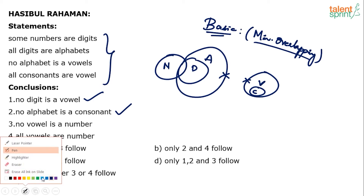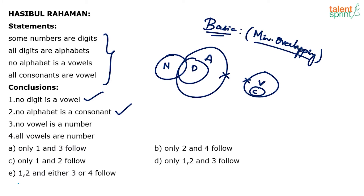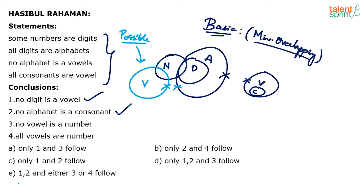Let me draw a possible diagram. The statement says no alphabet is a vowel, so vowels must stay separate from alphabets. But I can draw vowels in a different position — one possible diagram has vowels overlapping with numbers. In this case, vowels and numbers are overlapping, meaning some vowels are numbers. So 'no vowel is a number' is actually a false conclusion — it satisfies the basic diagram but fails in the possible diagram, hence it is false.